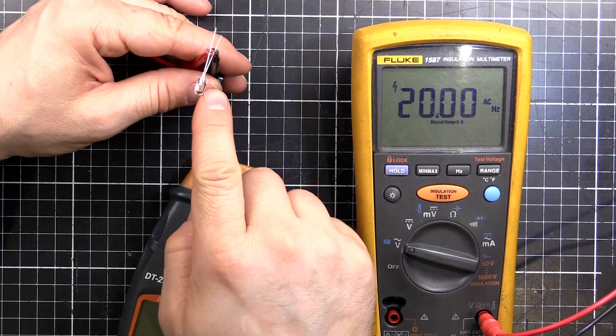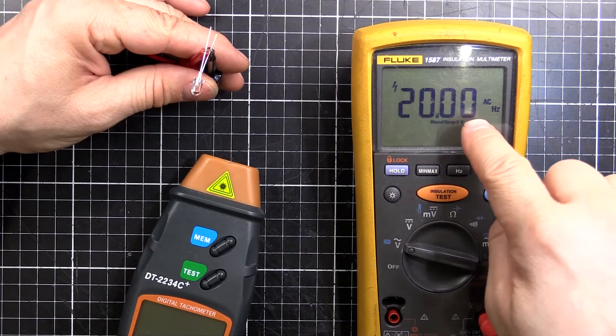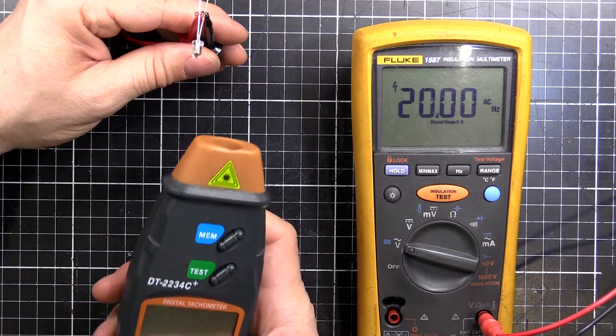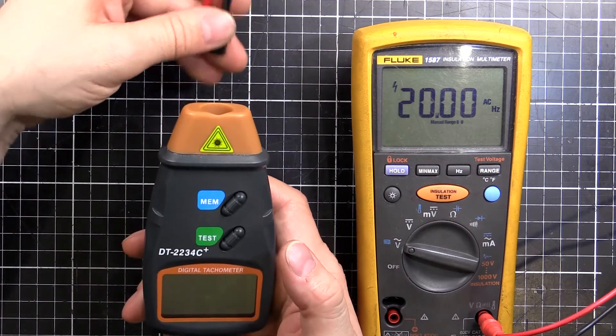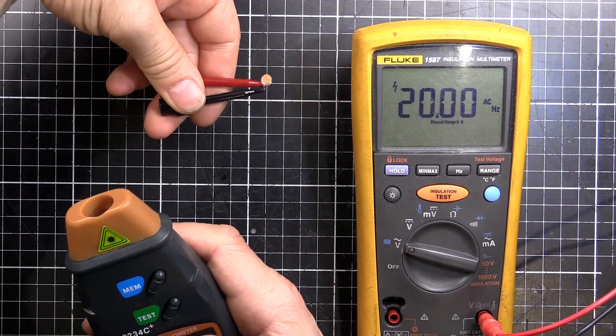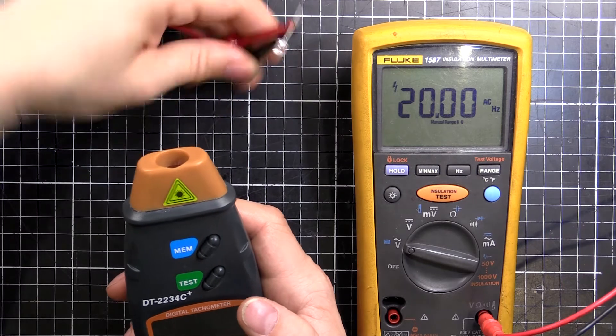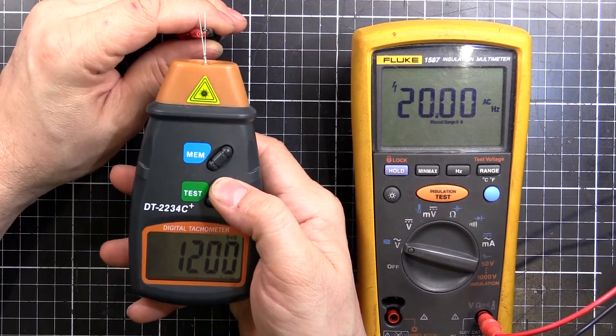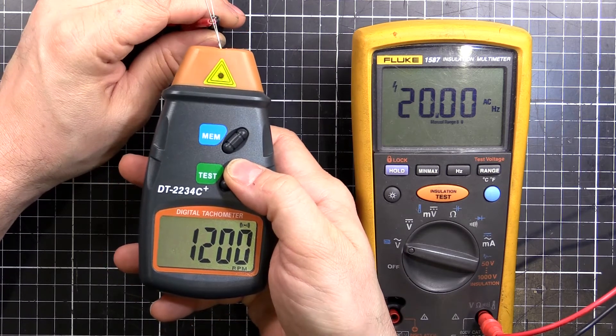I'm set up here with an LED connected to my function generator. I've got my multimeter. We've got exactly 20 Hertz coming out, that should translate to about exactly 1200 rpm. The LED's actually flashing a different rate than what it looks like because of the frame rate of the camera. But if I stick that in the front here and press the test button, we should get 1200. Look at that, spot on perfect.